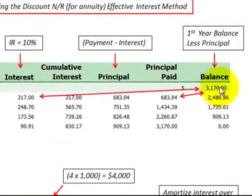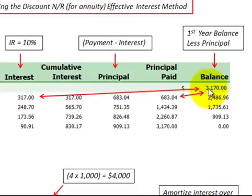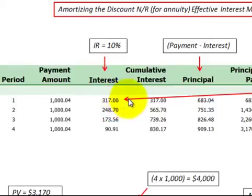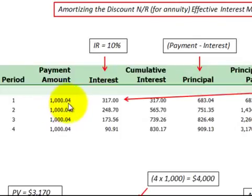In our amortization schedule we start out with a beginning balance of $3,170, which is the present value of the notes receivable or payable. For the year we would pay 10% interest on that balance, so 10% times $3,170 gives us $317 worth of interest for the year. We had a payment of $1,000 at the end of the first year.